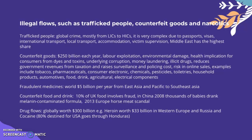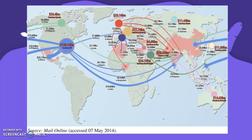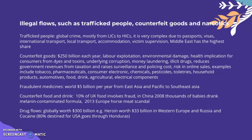Illegal flows include trafficked people, counterfeit goods, and narcotics. Human trafficking is a global crime mostly flowing from LICs to HICs, and is very complex due to the passports, visas, international and local transport, accommodation, and victim supervision involved. The Middle East has the highest share of trafficked people. Counterfeit goods are worth 250 billion dollars a year as an industry, and involve labor exploitation.